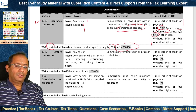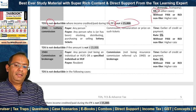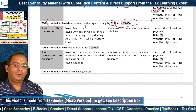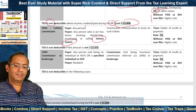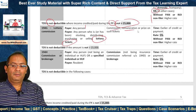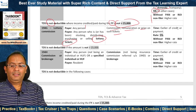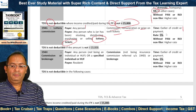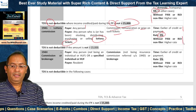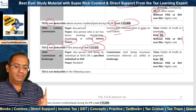Section 194G covers lottery commission. The payer can be any person and the payee is any person who is or has been stocking, distributing, purchasing or selling lottery tickets. The specified payment is commission, remuneration or prize on such lottery tickets. TDS is deductible at the time of the earlier of credit or payment at the rate of 5%. A higher rate applies for without-PAN or ROI non-filer cases. TDS is not deductible if the amount is not more than Rs. 15,000.